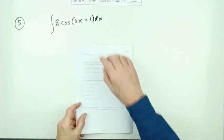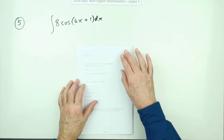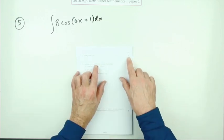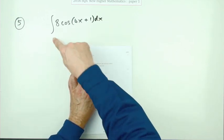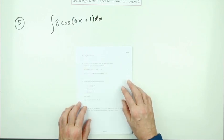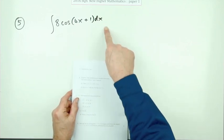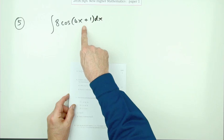Number five from paper one of the 2016 higher maths, still staying nice and easy here. For two marks you've got this little indefinite integral to write down. Find the integral of this. Notice it's a function of a function.